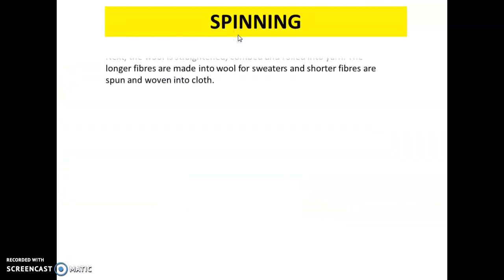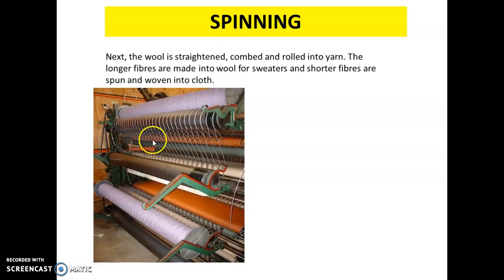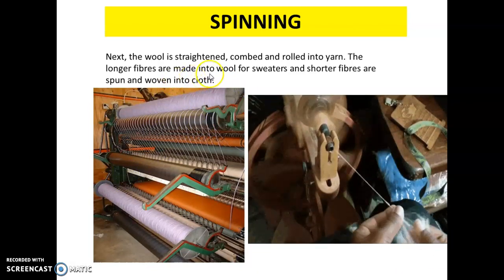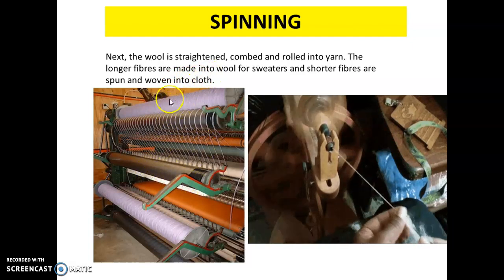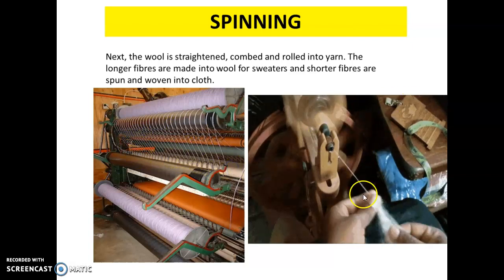Step 7 is spinning. The wool is straightened, combed, and rolled into yarn. Long fibers are made into wool for sweaters, and shorter fibers are spun and woven into cloth. Spinning can be done by machine or manually.